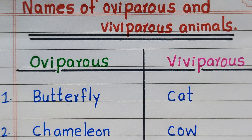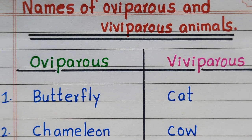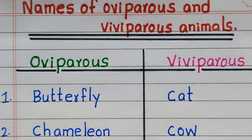The first two examples of oviparous animals are Butterfly and Chameleon. The first two examples of viviparous animals are Cat and Cow.